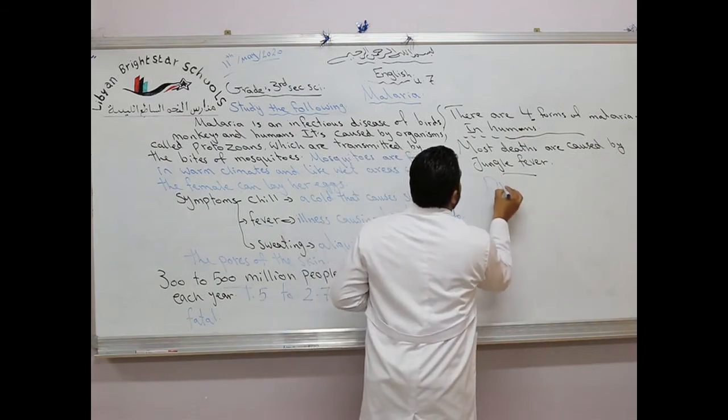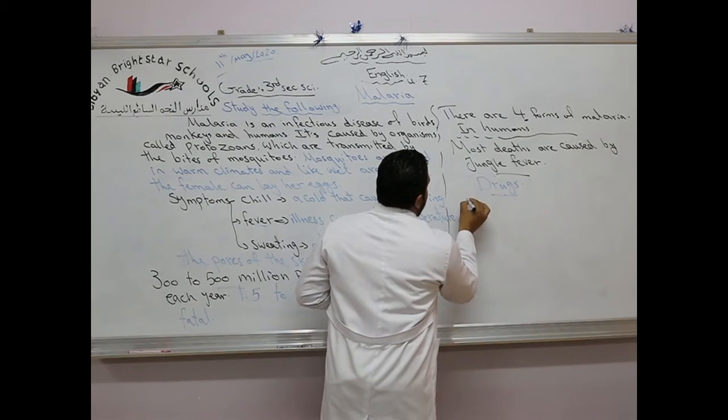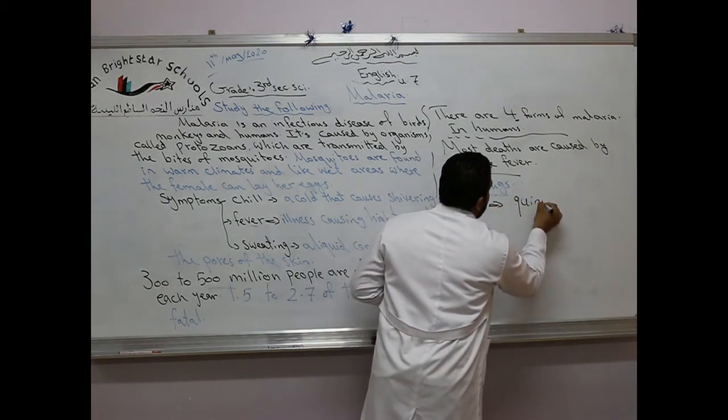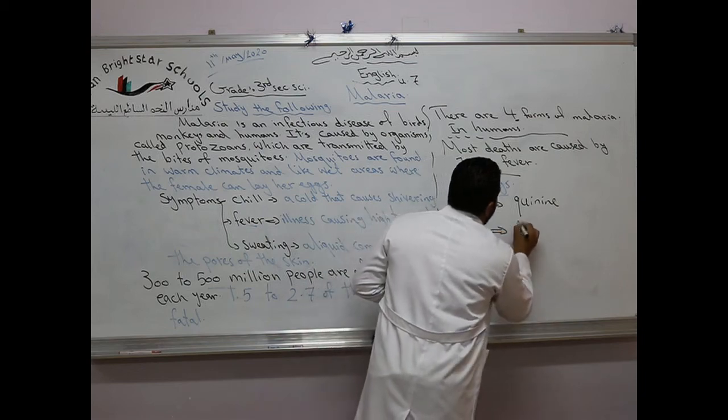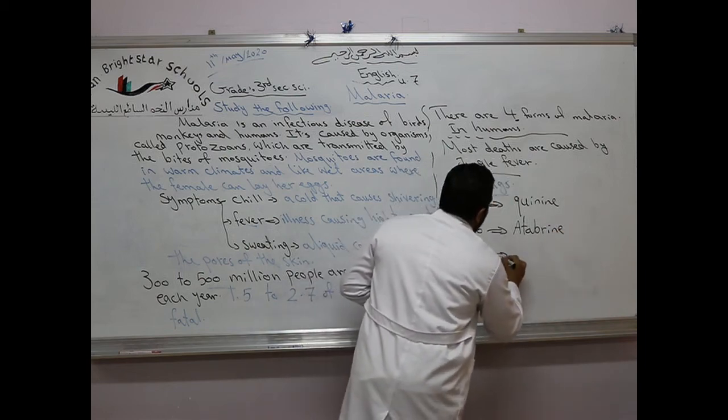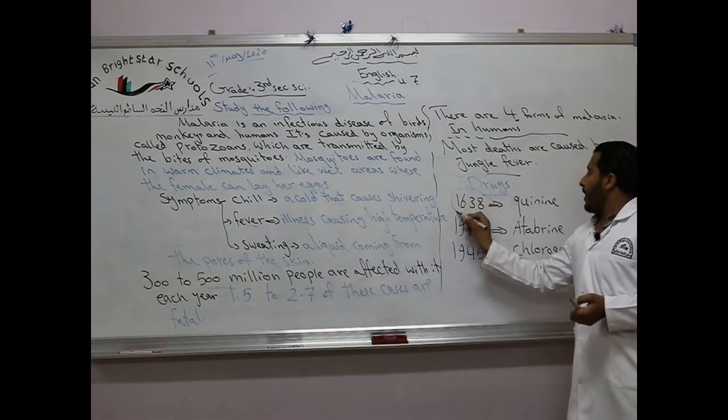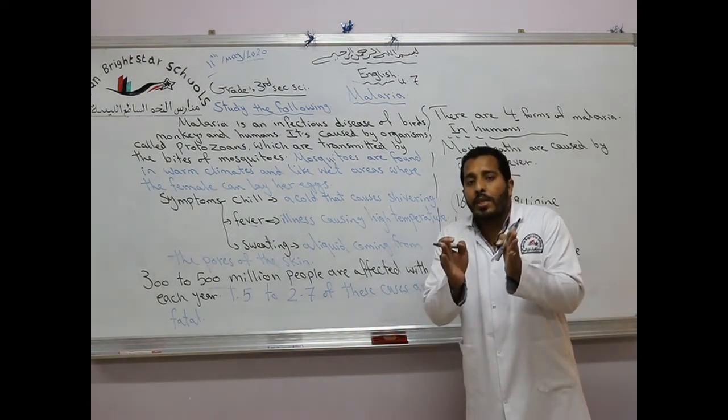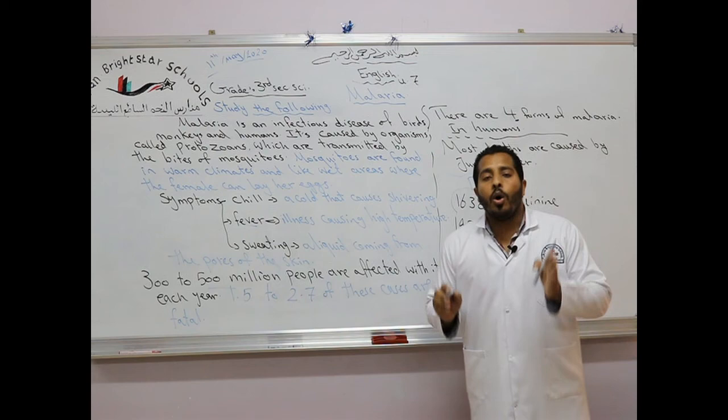What about drugs? In 1638, malaria was treated with quinine. It slows the growth of protozoans in the bloodstream, but it was also rather toxic.